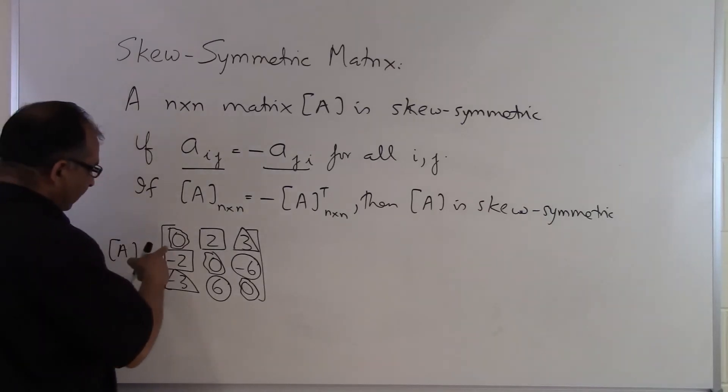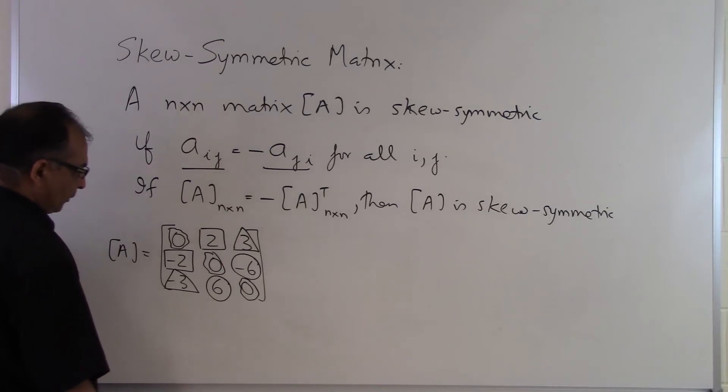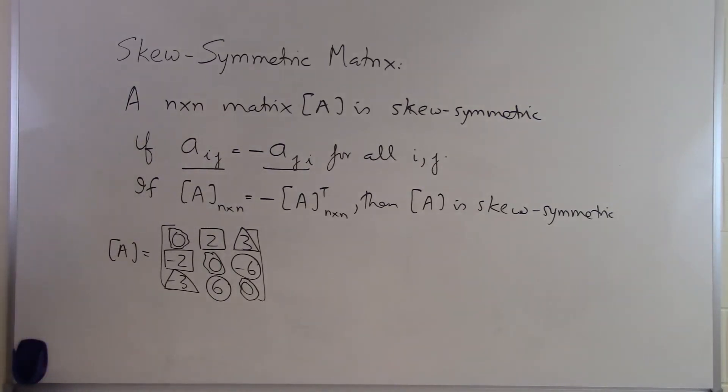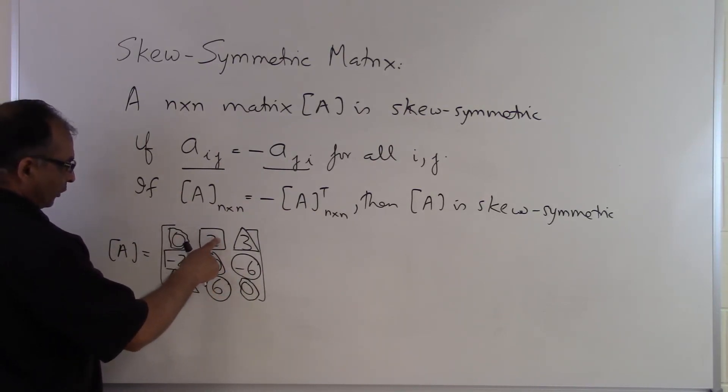Because the only way you will find out that the diagonal element, this element is going to be negative of itself, is only possible if this element, this element and this element is zero. So for every skew symmetric matrix the diagonal elements will be always zero because that's the only way to satisfy this condition. But for any of the non diagonal elements the only requirement is that it has the opposite sign.